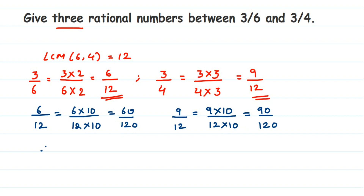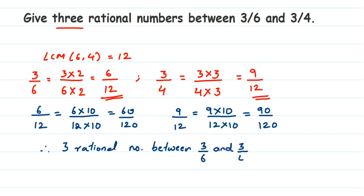I multiplied by 10, but you can multiply by 5, 50, or 100 — that is why there are infinitely many rational numbers. Your answer may not match mine or your teacher's, but it will still be correct. Therefore, three rational numbers between 3/6 and 3/4 are — picking any three between 60 and 90, not including 60 or 90 — for example: 69/120, 75/120, and 88/120. I hope this is clear. If you have any questions, drop a comment. Thank you for watching.